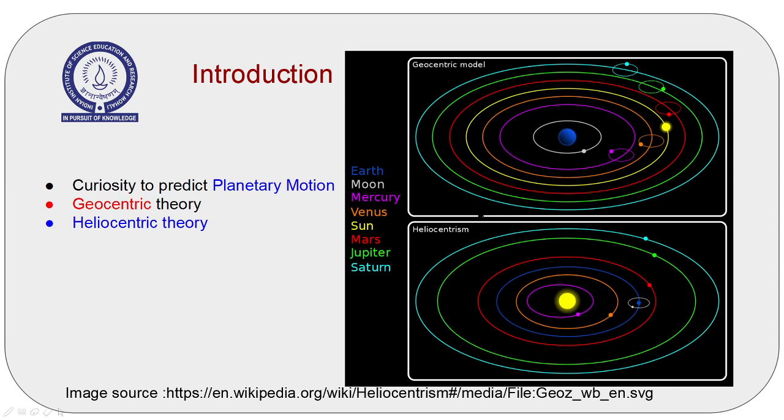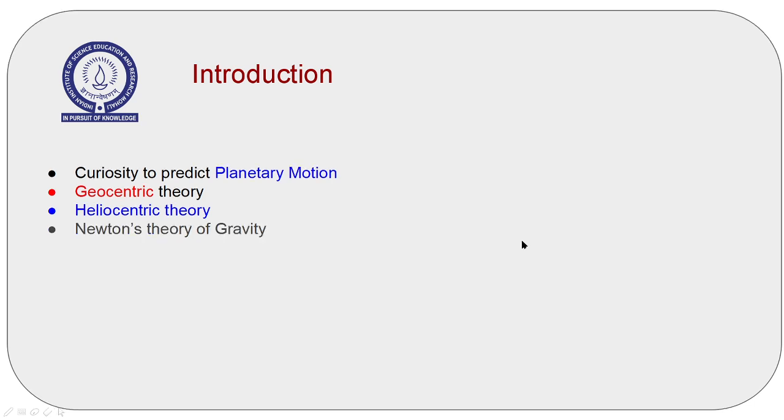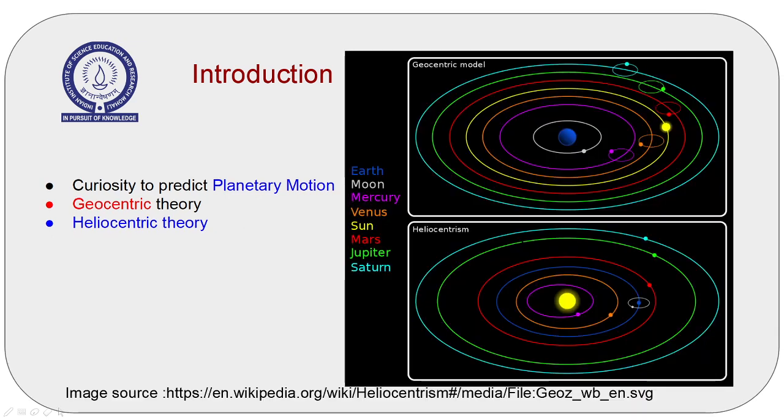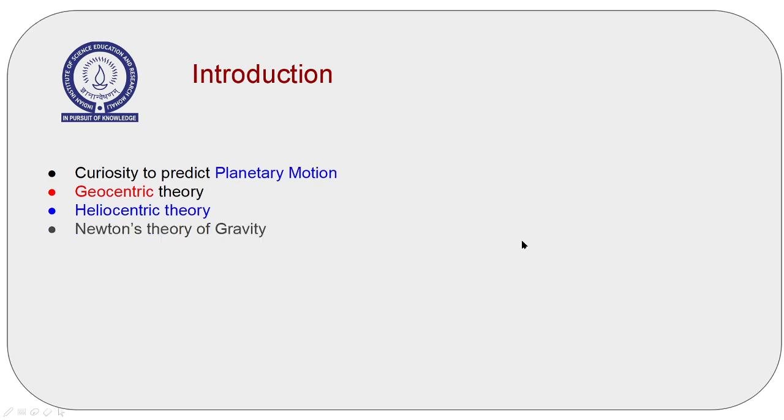The existence of the heliocentric solar system gradually mounted when Galileo observed the moons of Jupiter with his telescope. This was the first time in human history when a telescope was used to observe the planets. This observation refuted the geocentric theory.